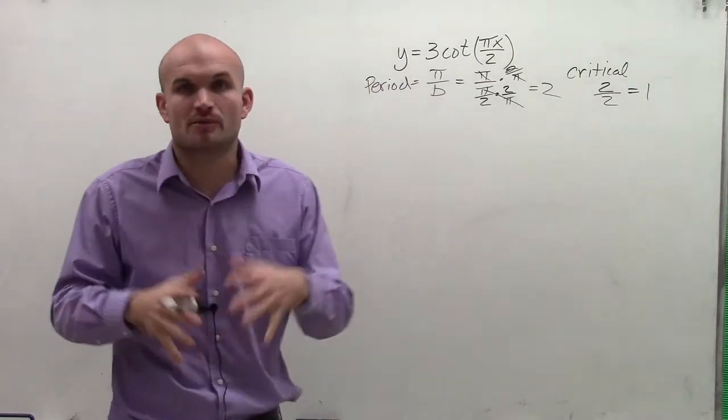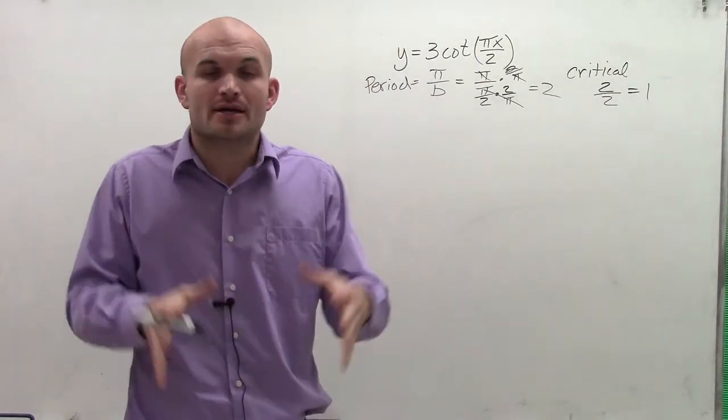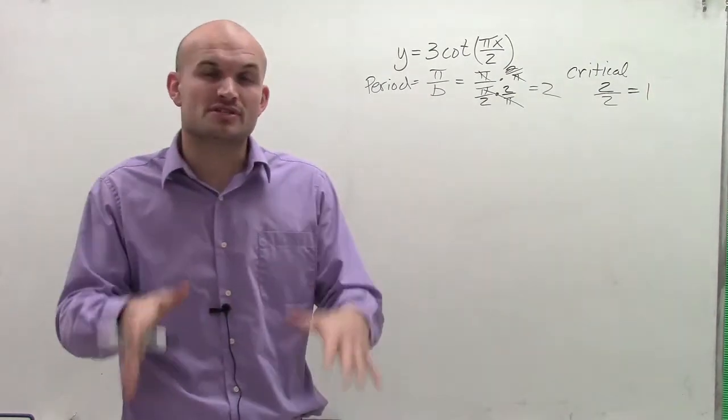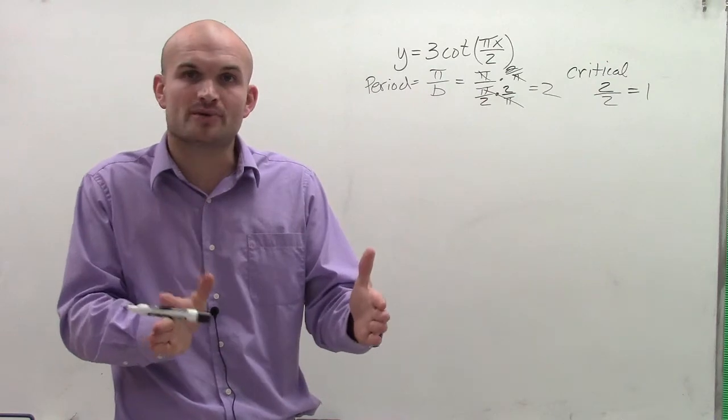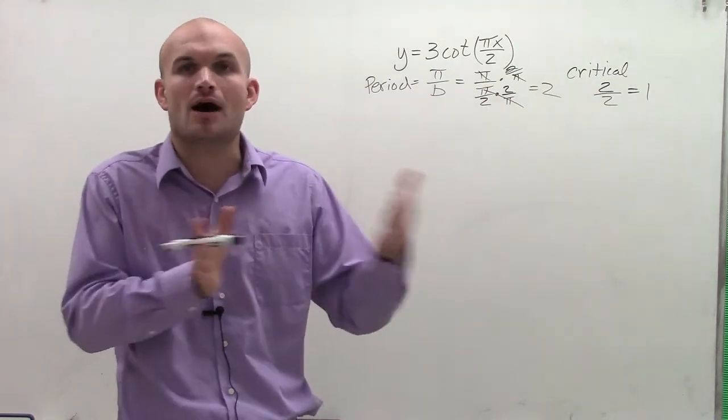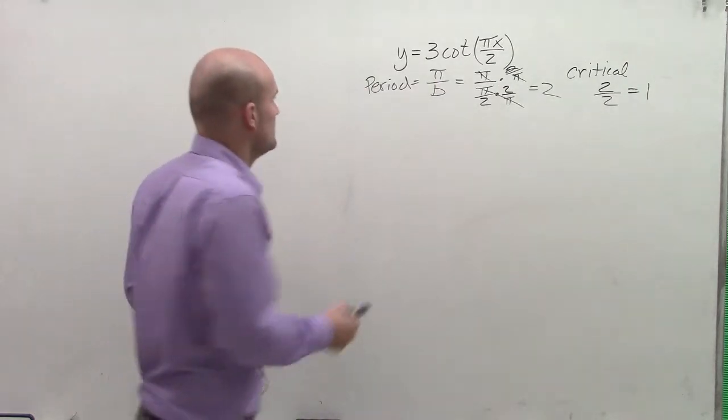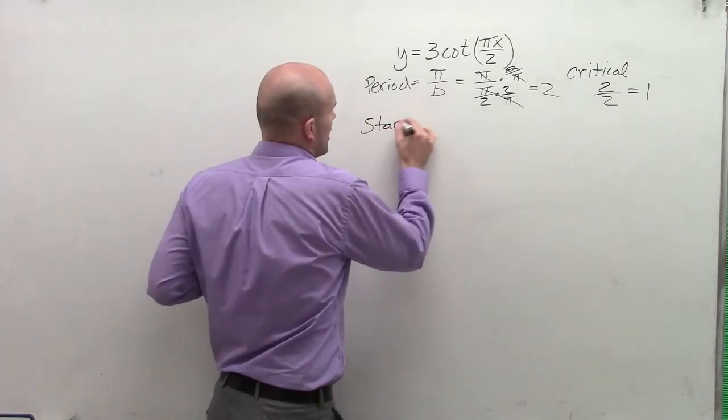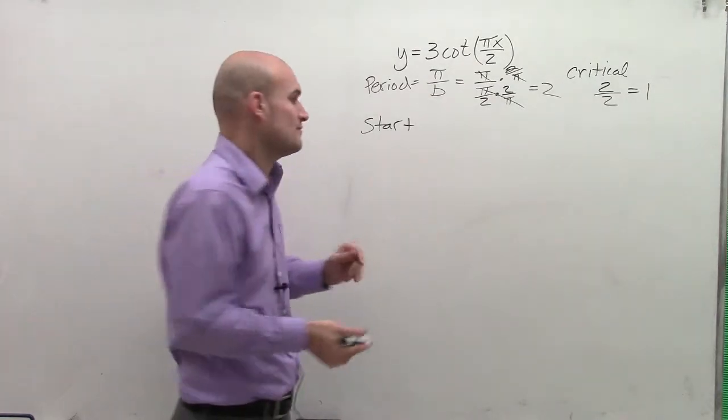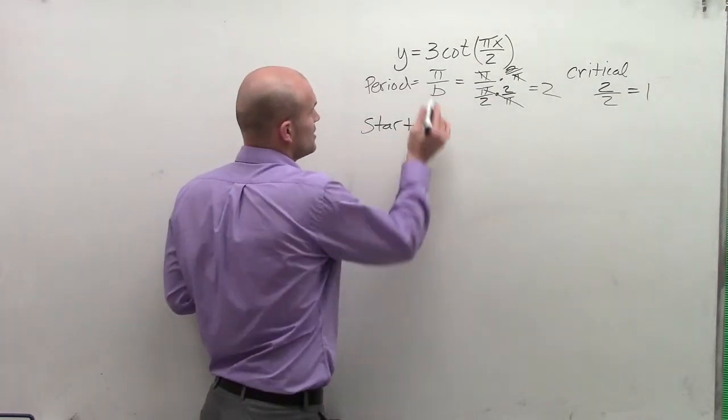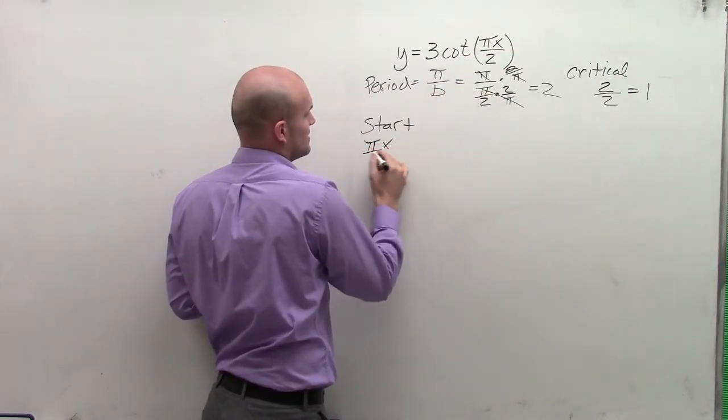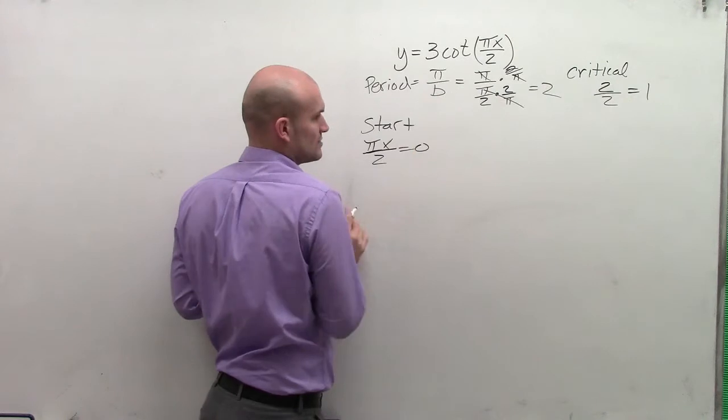Next I want to determine what the initial period is. The cotangent graph repeats itself on and on, but if we look at just one initial period where a graph starts and ends, we can use transformations to see how that's going to alter our graph. To find the start and end, our initial cotangent graph starts at 0, meaning it's going to have an asymptote at 0. We take whatever's inside our function, which is pi x divided by 2 equals 0.